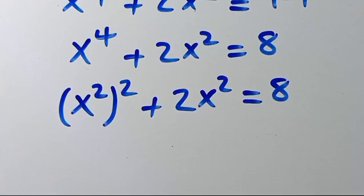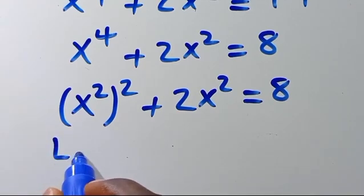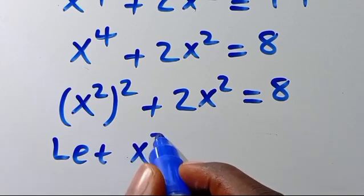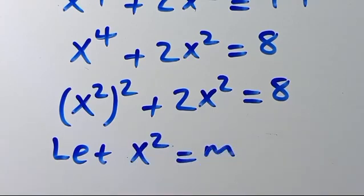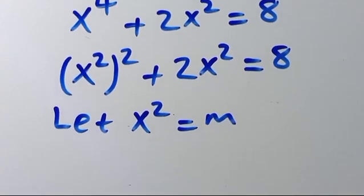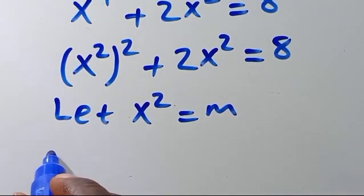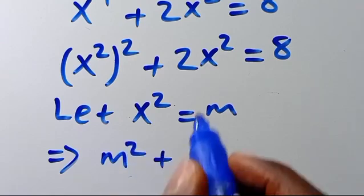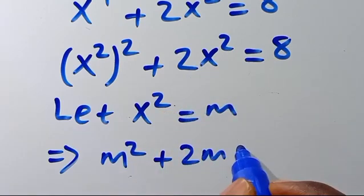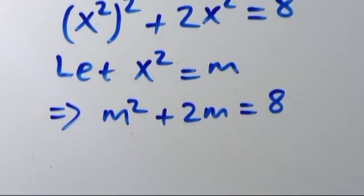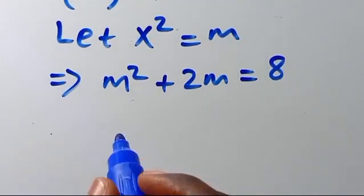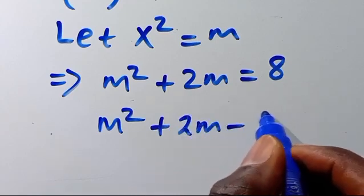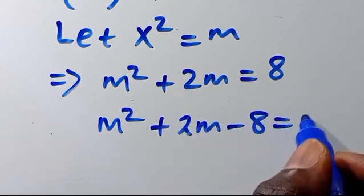So if we let x squared equal M, from here we are going to have M squared plus 2M equals 8, giving us M squared plus 2M minus 8 equals 0.